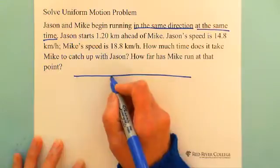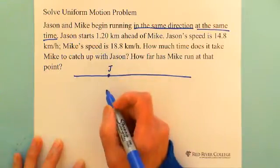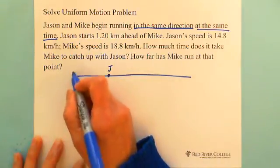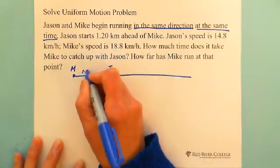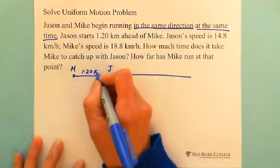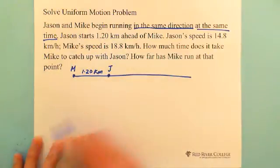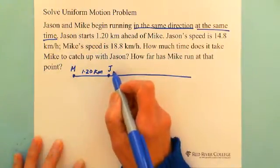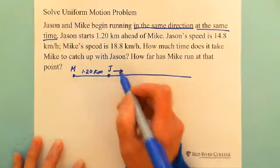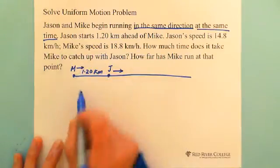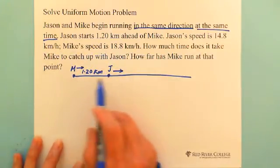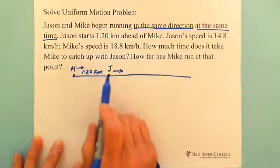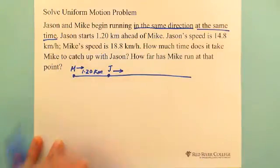So Jason is 1.20 km ahead of Mike. They're running in the same direction, starting at the same time, but Jason is ahead of Mike.